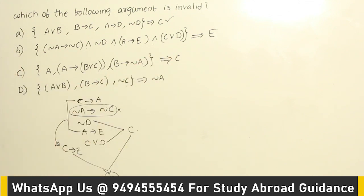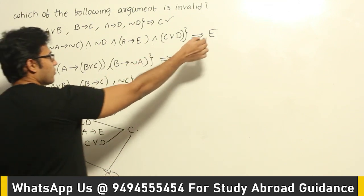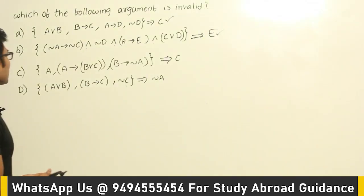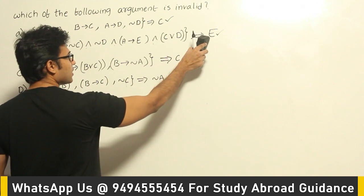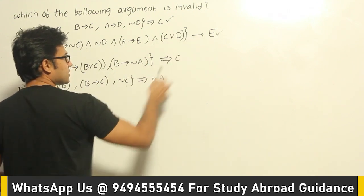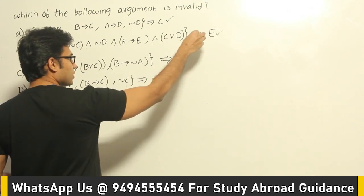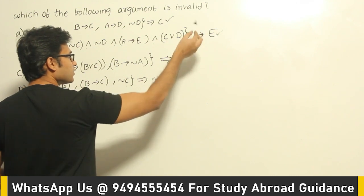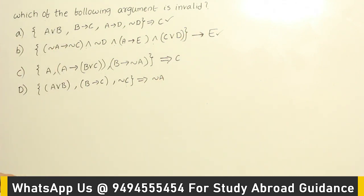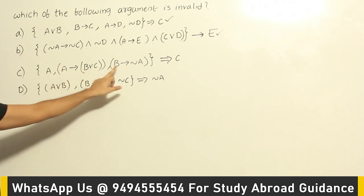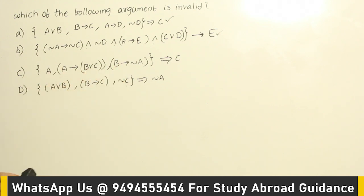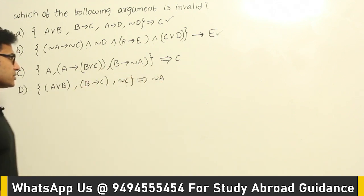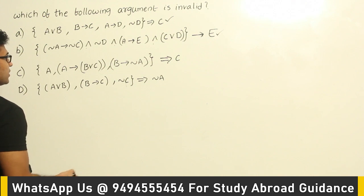E is the conclusion given, so option B is also a valid argument. Now for option C, the premises are: A implies B or C, B implies negation A, and A. Note: when using this representation you should use simple implication, not logical total implication. Let's check whether the conclusion C is valid.